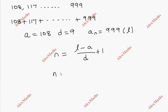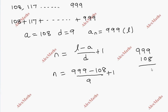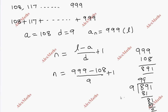So, n equals (999 minus 108) divided by 9, plus 1. That gives us 891 divided by 9, plus 1, which equals 99 plus 1. So n is equal to 100.